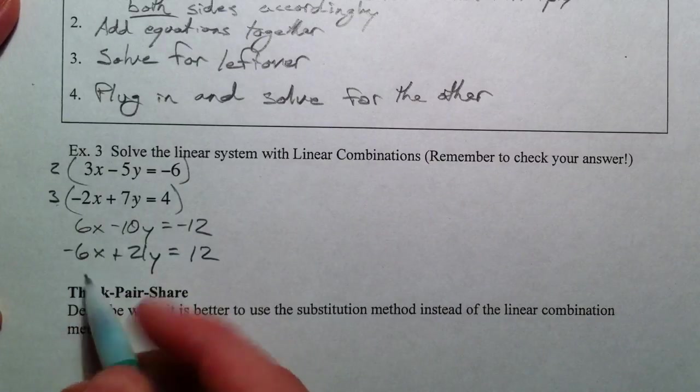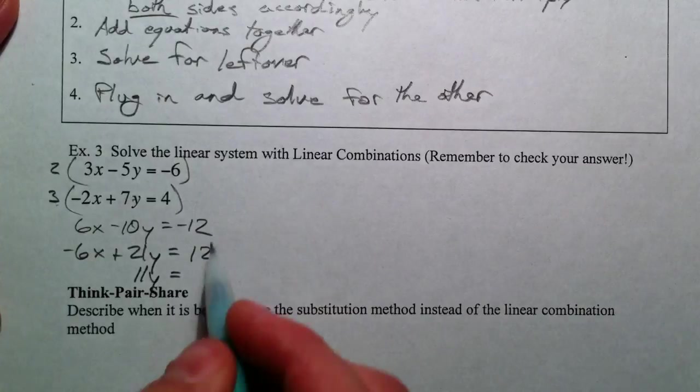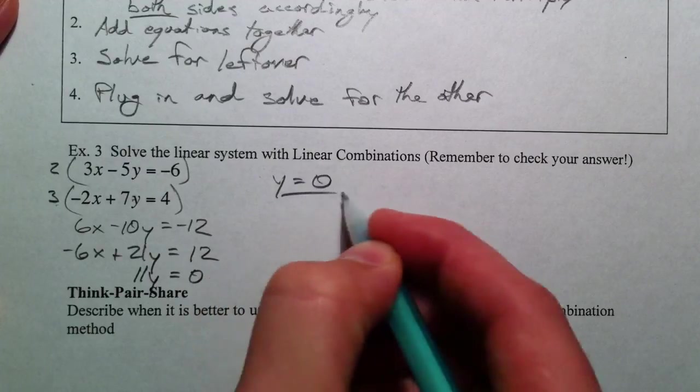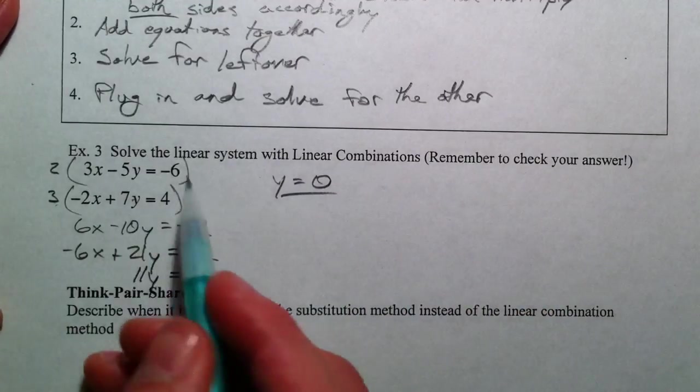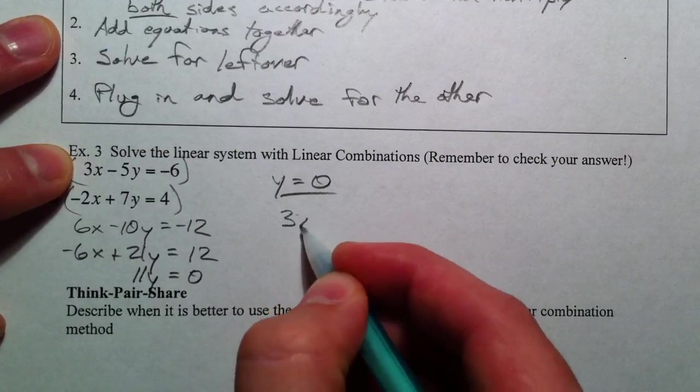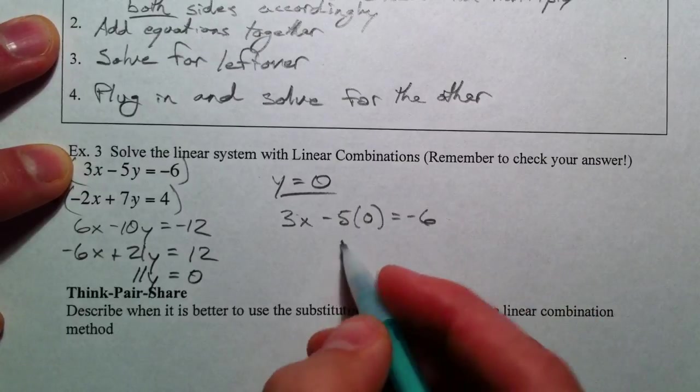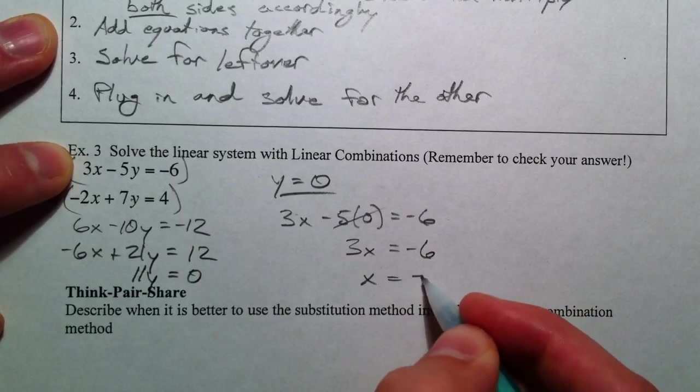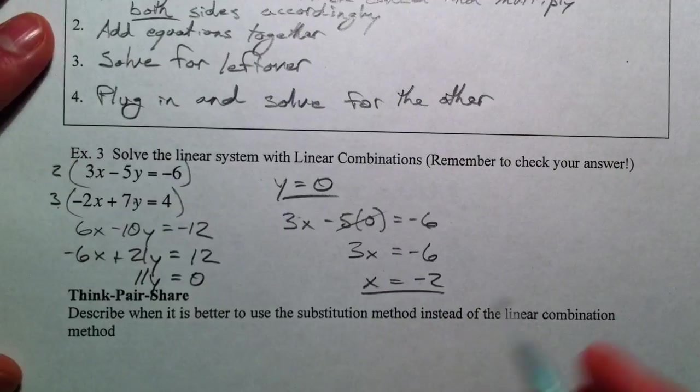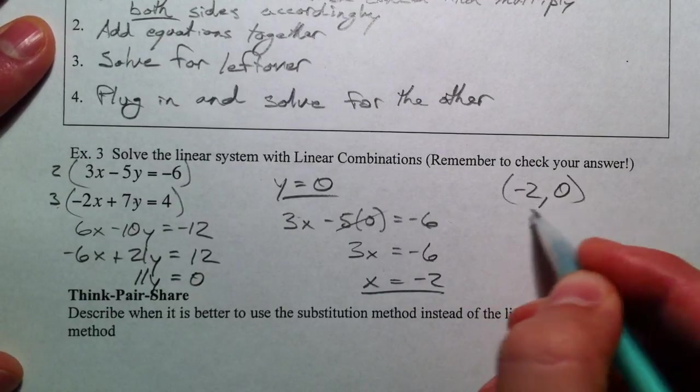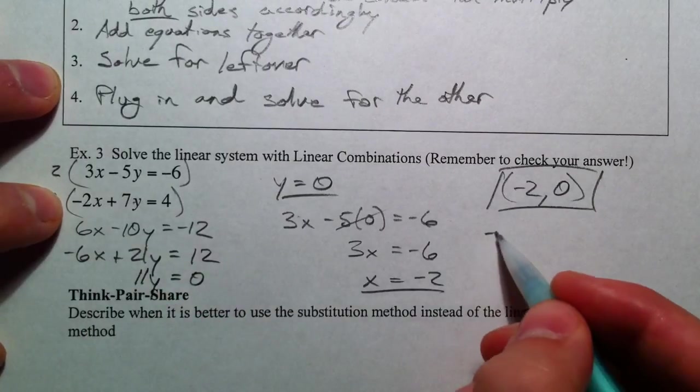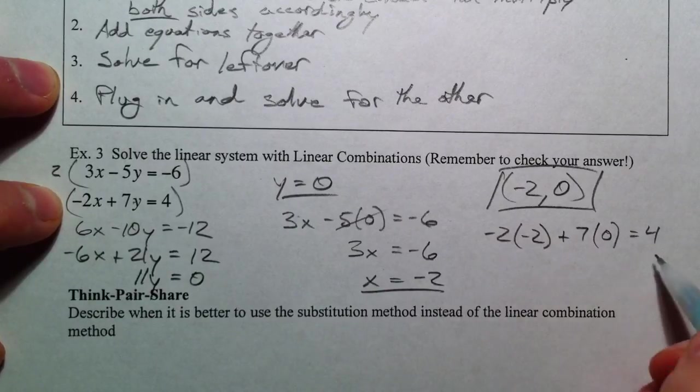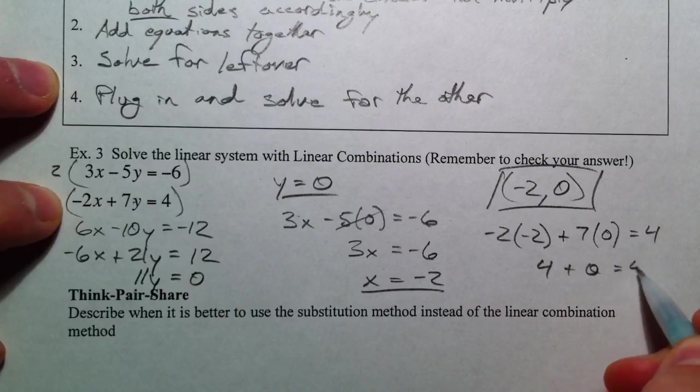So, the 6x's cross out. You get 11y equals 0. So, if you divide by 11, 0 divided by 11, y equals 0. Plug it back in and solve. So, 3 times x minus 5 times 0 equals negative 6. That cancels out. 3x equals negative 6. So, divide by 3 and you get negative 2. Remember to check it. I'm going to plug negative 2 times negative 2 plus 7 times 0 equals 4. 4 plus 0 equals 4. And that checks out.